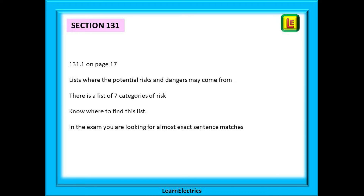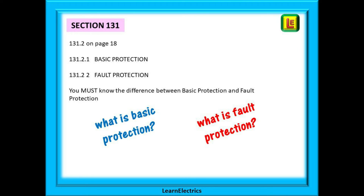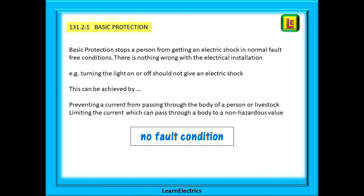Regulation 131.1 gives us a list of risks that might exist, and exam setters love lists. On page 18 we find two very important regulations frequently asked as exam questions. They cover basic protection and fault protection. Regulation 131.2.1 — basic protection — stops a person from getting an electric shock in normal, fault-free conditions. The regulation states this can be achieved by preventing a current from passing through the body of a person or livestock, or by limiting the current which can pass through a body to a non-hazardous value. For example, turning a light on or off should not give an electric shock because the switch cover provides basic protection.